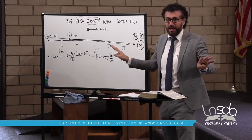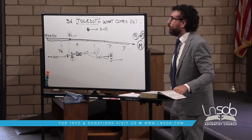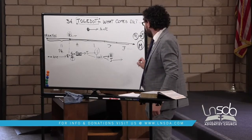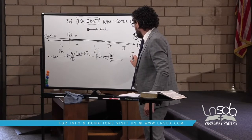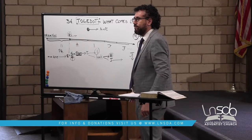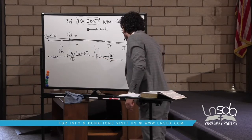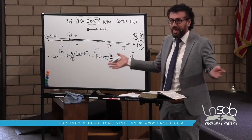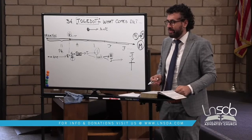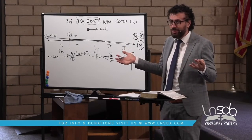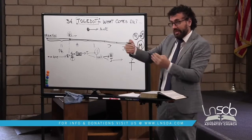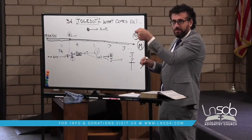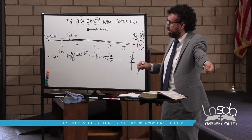The book of Genesis has no more Toledots after that, and it ends in a very strange way — Joseph is put in a coffin. Joseph dies, put in a coffin, and the story stops there. But the story cannot stop there. The way the narrative is constructed indicates clearly that something has to come. And indeed, the book of Exodus picks up the story exactly where the book of Genesis leaves it.